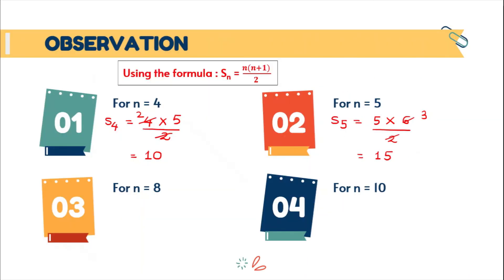Now for n equal to 8, let us calculate the sum of first 8 natural numbers. This will be 8 multiplied by 9 divided by 2. This will give me 36. Now last, sum of 10 natural numbers is equal to 10 into 11 upon 2, which equals 55.